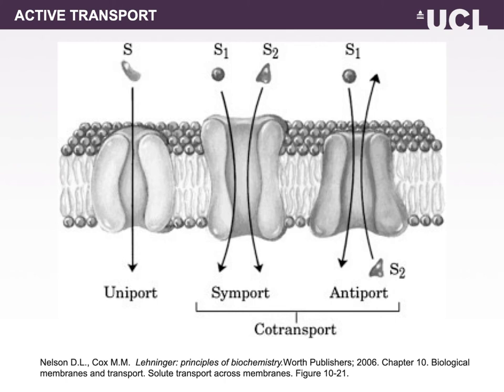Active transport requires a form of energy, often ATP, to drive the movement of solutes against their electrochemical gradient, resulting in a non-equilibrium distribution of solutes across the membrane. A number of terms are commonly used to describe different types of active transport, such as uniports, symports, and antiports.